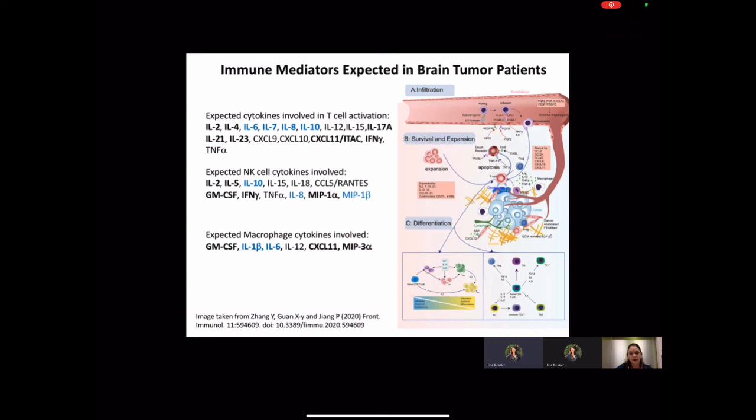I want to note that MIP3-alpha, or CCL20, has a known role in solid tumor metastasis and in glioblastoma. The tumor RNA-seq data indicated that there was a signature of activated and exhausted T cells present in both the brain metastasis and the glioblastoma tumors, and thus we would expect to have high MIP3-alpha along with higher circulating levels of GM-CSF and MIP1-alpha from myeloid cell recruitment in our tumor patients.